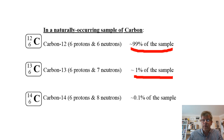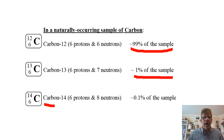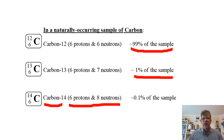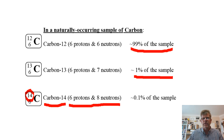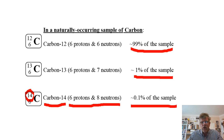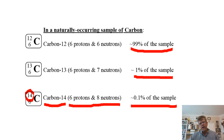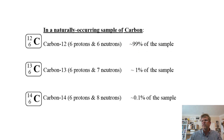Lastly, any naturally occurring sample of carbon also contains a vanishingly small amount of carbon-14, which has 6 protons and 8 neutrons (mass number 14). Carbon-14 comprises about one-tenth of one percent of the sample. These are the three major isotopes of carbon, always present in any naturally occurring sample.